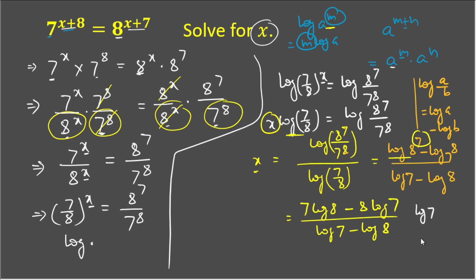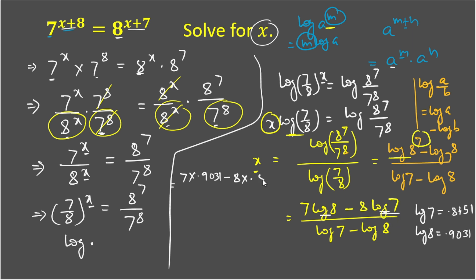From the log table, log 7 = 0.8451 and log 8 = 0.9031. Substituting these values, the numerator becomes 7 × 0.9031 minus 8 × 0.8451, and the denominator becomes 0.8451 minus 0.9031.